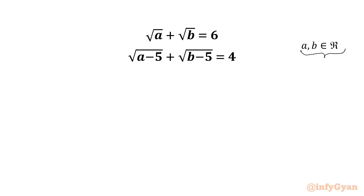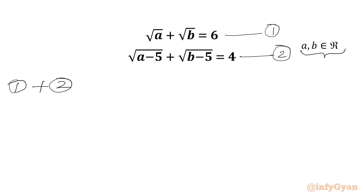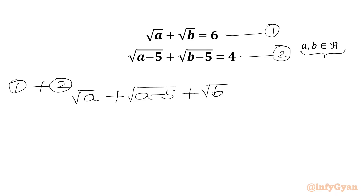Let's get started. We label the first expression as equation 1 and the second as equation 2. Now we will perform operation 1 plus 2 — adding both equations. We get: square root a plus square root (a minus 5) plus square root b plus square root (b minus 5) equals 6 plus 4, which is 10.